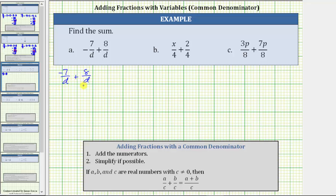Again, because we already have a common denominator, we add the fractions by adding the numerators. The denominator remains d and the numerator is going to be negative seven plus eight. Negative seven plus eight is equal to one, which gives us a sum of one over d, which does not simplify.